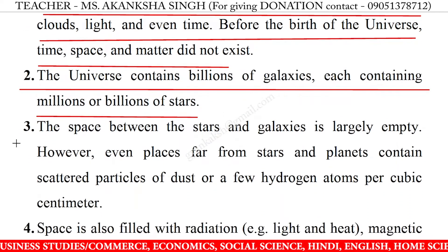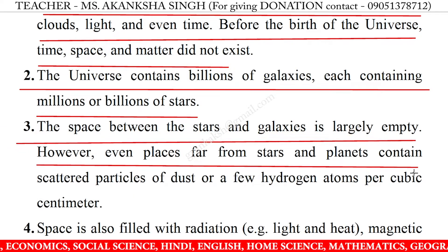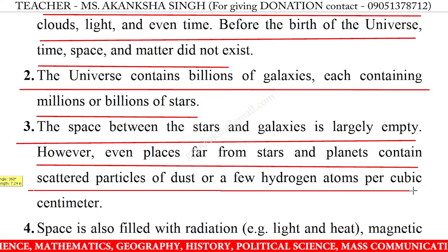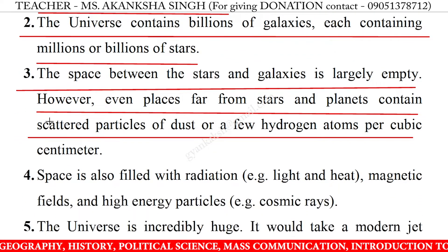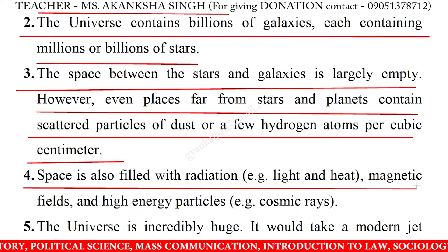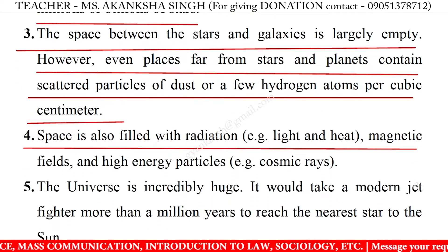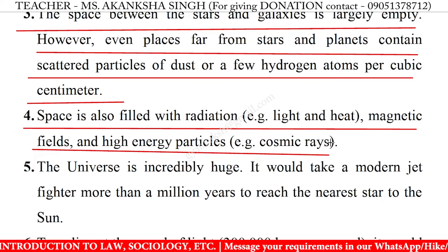Number 3: The space between the stars and galaxies is largely empty. However, even places far from stars and planets contain scattered particles of dust or a few hydrogen atoms per cubic centimeter. Number 4: Space is also filled with radiation, e.g. light and heat, magnetic fields, and high-energy particles — for example, cosmic rays.